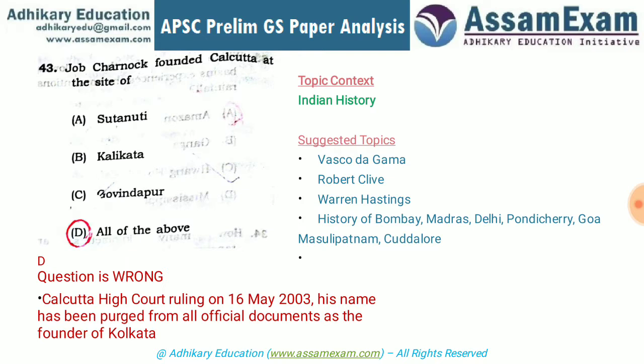Question 43 asks about the founder of Calcutta. The question states Job Charnok was the founder and asks about the locations. However, this question is technically wrong — the Calcutta High Court ruled in 2003 that Job Charnok cannot be considered the founder of Calcutta. But as an exam aspirant, you must still choose from the four options, and the correct answer is D — all three mentioned sites are part of Calcutta.